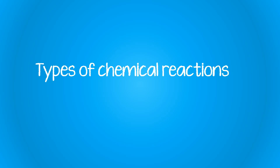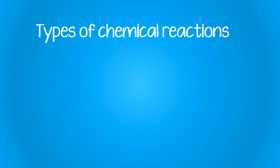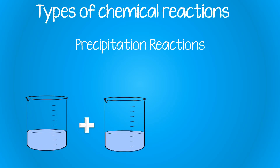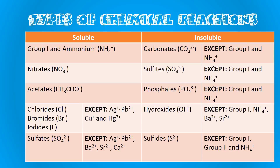Today we're going to be looking at a particular type of chemical reaction: the precipitation reaction. A precipitation reaction is when you have two soluble ionic compounds that react to produce an insoluble product, called a precipitate. The products of a reaction between two aqueous solutions of ionic compounds can be predicted using a solubility table.